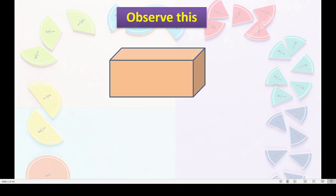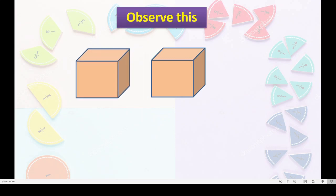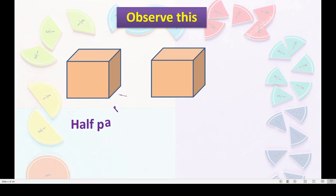Now, here we can see an object — this is one whole. I will try to divide this into equal parts. We have two equal parts of this one whole. I will take this away so that you can see properly. Tell me, how many total parts did we make? Two. And this one is half part of that whole, and this is also a half part of that whole.